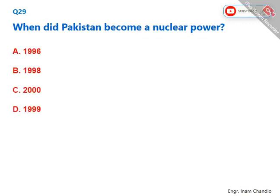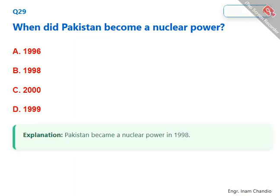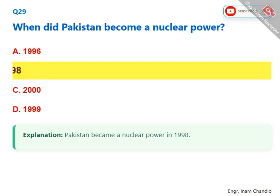When did Pakistan become a nuclear power? Pakistan became a nuclear power in 1998. The correct answer is B. 1998.